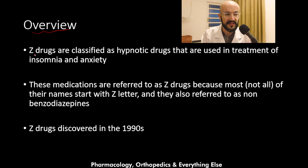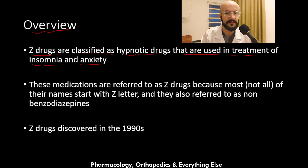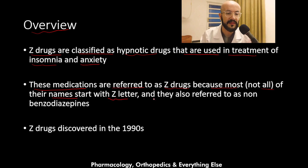The Z-drugs are classified as hypnotic drugs that are used in the treatment of insomnia and anxiety. These medications are referred to as Z-drugs because most of them — not all — have names that start with the letter Z. They are also referred to as non-benzodiazepines.